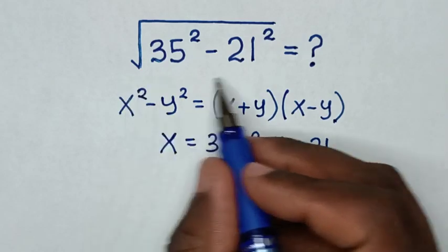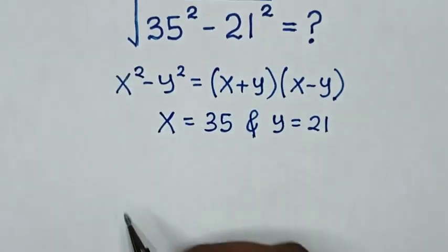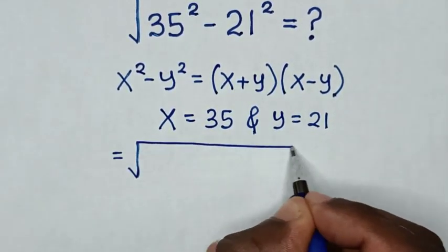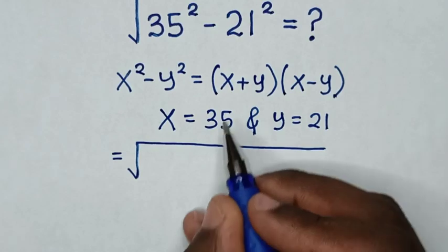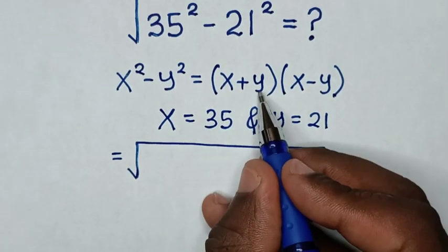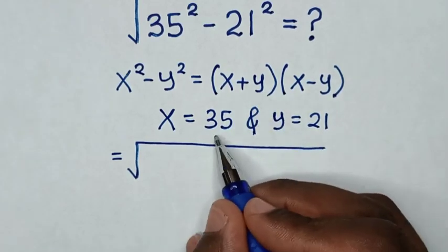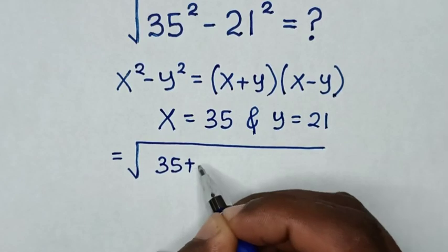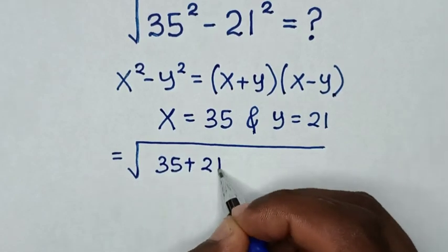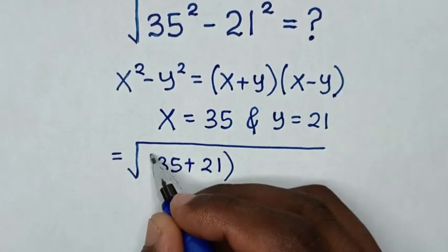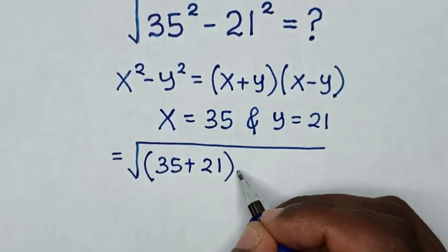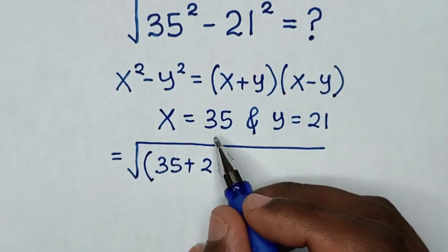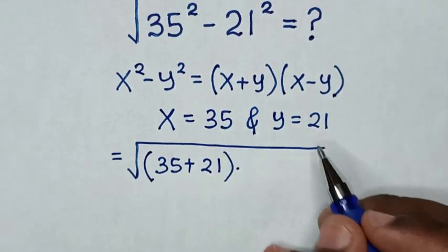Then this expression will be equal to square root of x plus y, which is 35 plus 21, times x minus y, which is 35 minus 21.